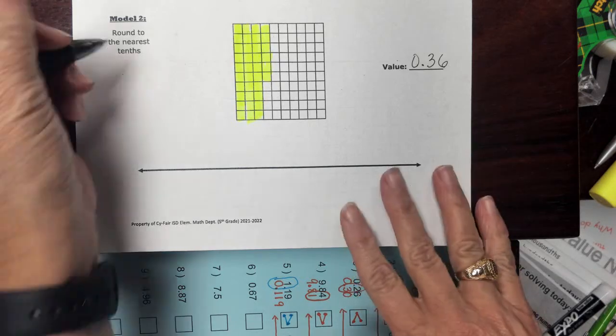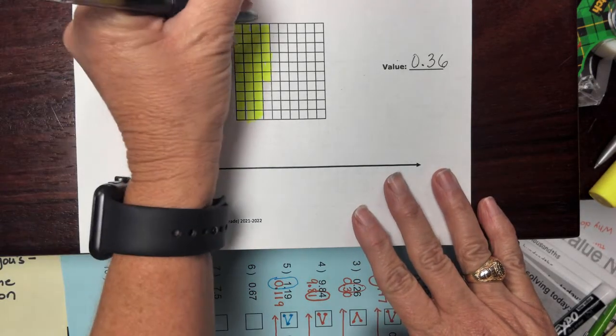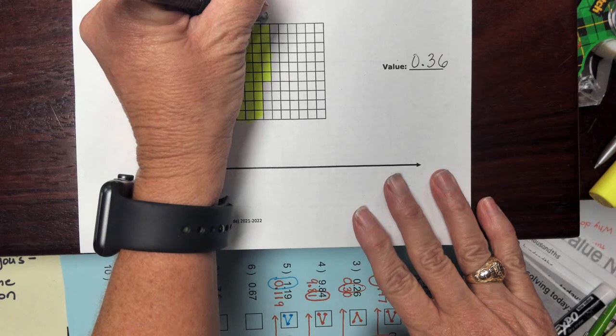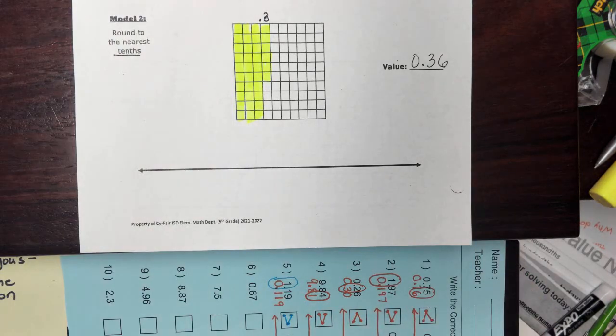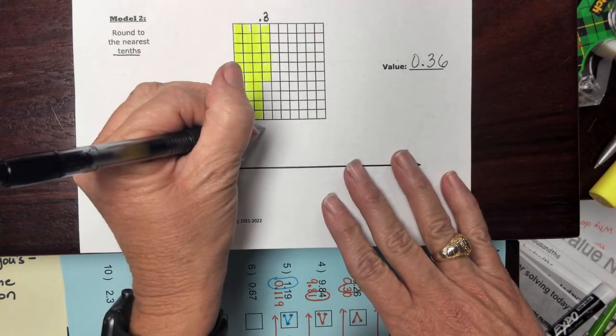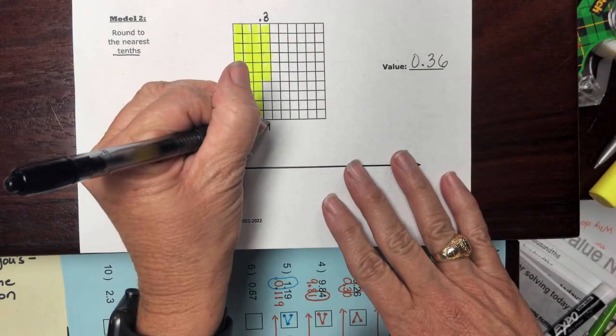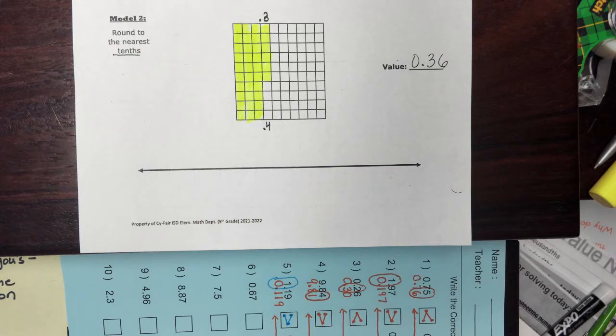And so if we're wanting to think about rounding to the nearest tenth, I want you to go ahead and put the number three up here because that would be three tenths. And the very next tenth would be four tenths if I were to shade all the way down. So right now, are you closer to being three tenths, or are you closer to being four tenths at the bottom? Raise your hand if you can tell me what you are thinking. What are you thinking, Israel?